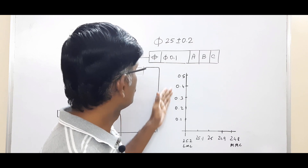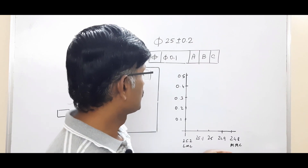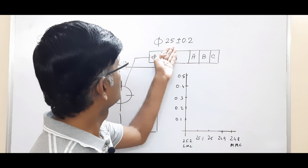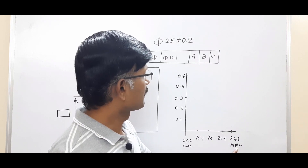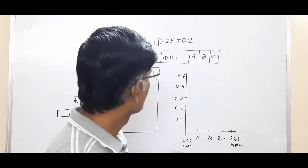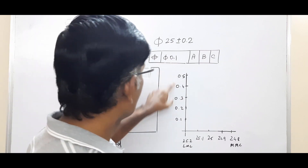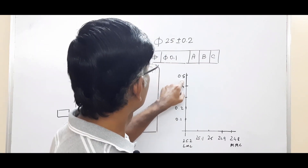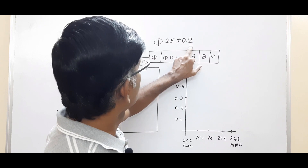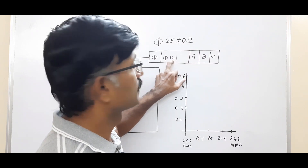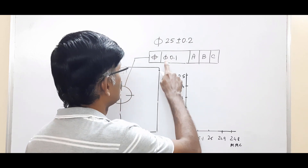On the Y-axis we have the geometrical tolerances; on the X-axis we will have the limit sizes. On the X-axis I will start with least material condition — in our example the LMC is 25.2 — and reduce in steps of 0.1 until I reach maximum material condition 24.8. On the Y-axis I start with 0.1, which is the geometrical tolerance given in the feature control frame, and go in steps of 0.1 until I reach 0.5. This 0.5 comes from: 25±0.2 gives a tolerance of 0.4, and 0.4 plus 0.1 equals 0.5.